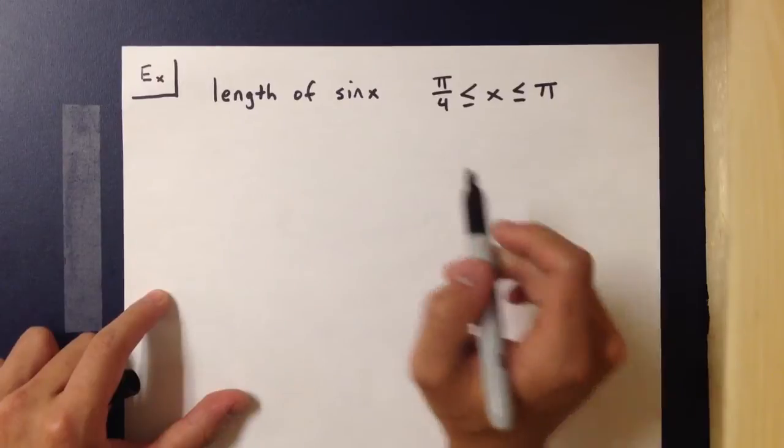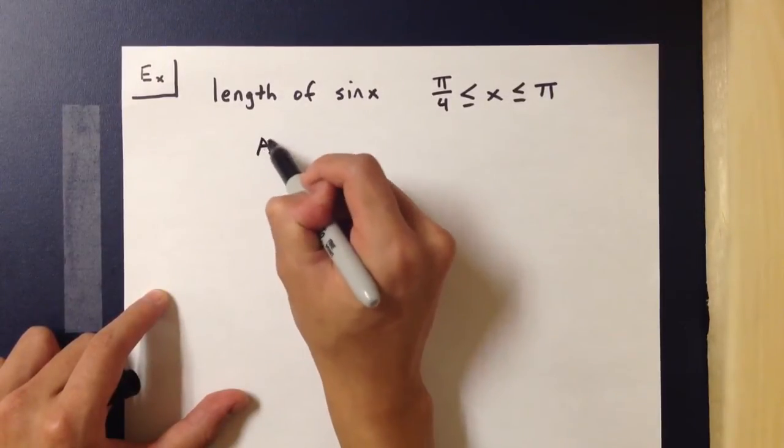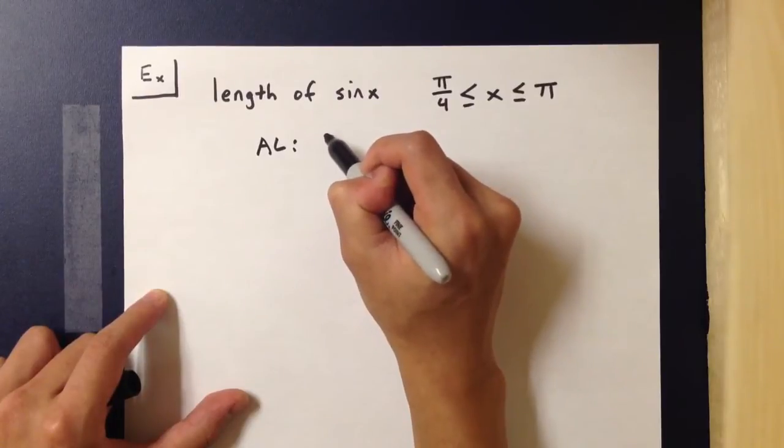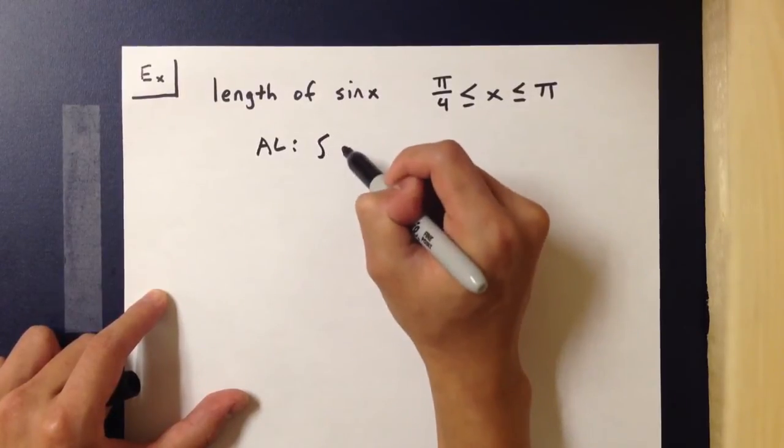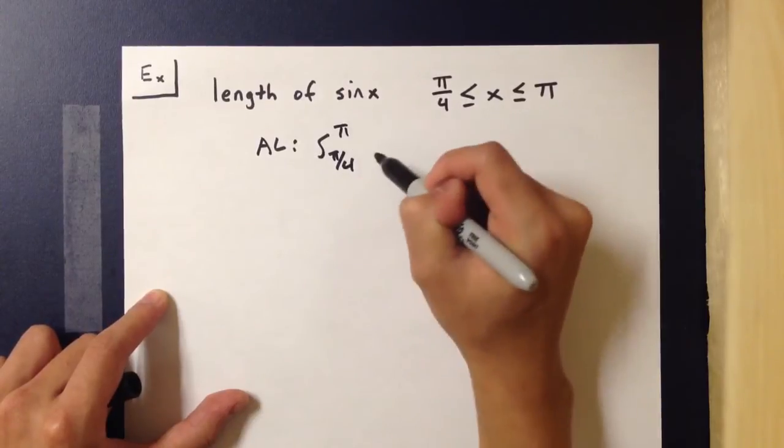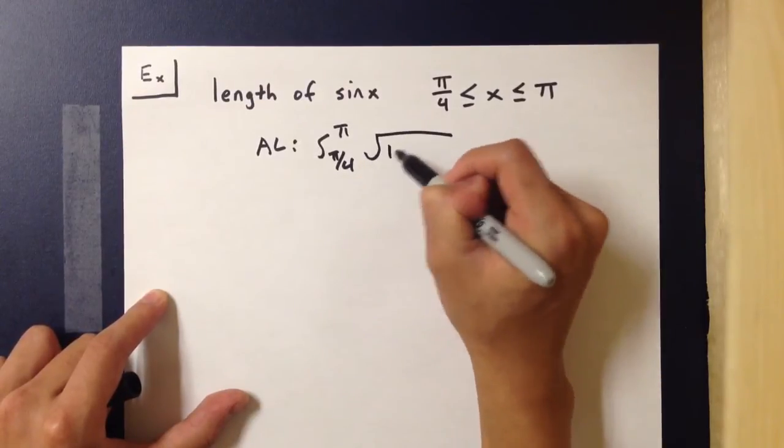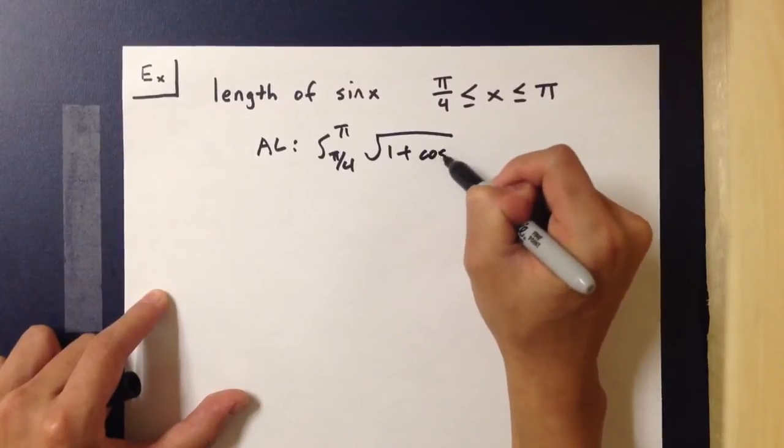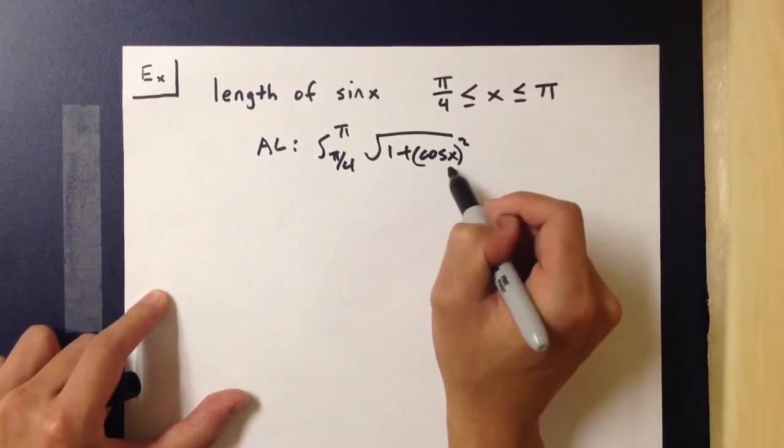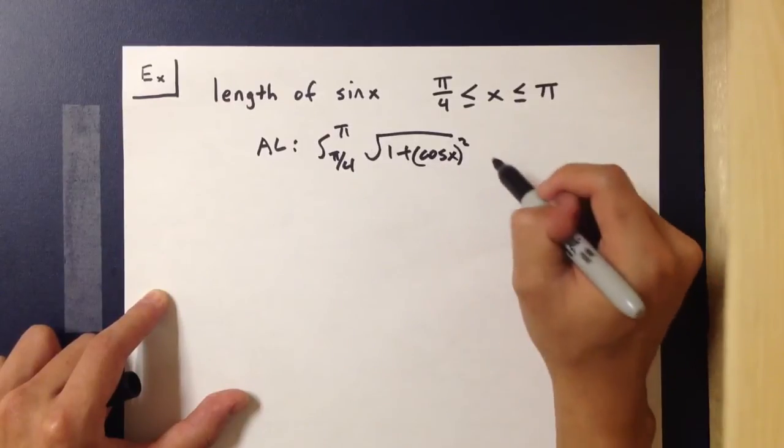And to find this, you would simply use the equation where the arc length, AL, would be equal to the integral from π/4 to π of the square root of 1 plus cos²(x) dx. Cosine x being the derivative of sine x.